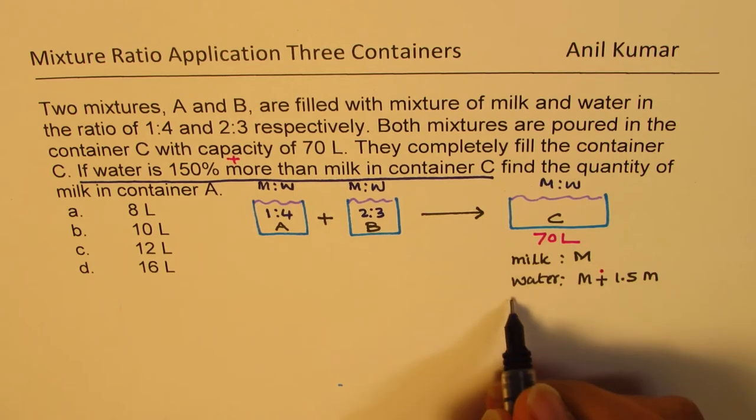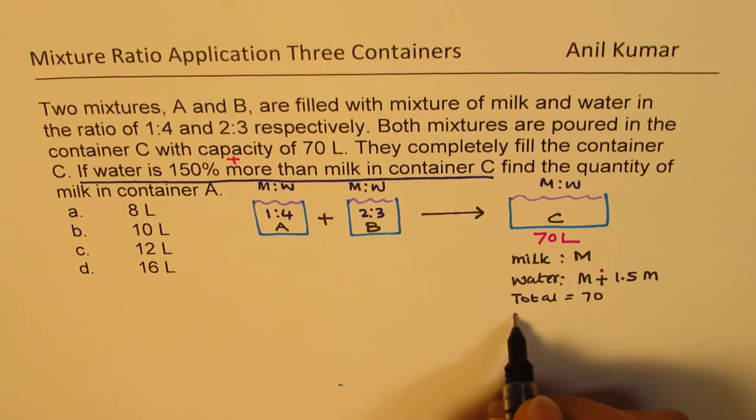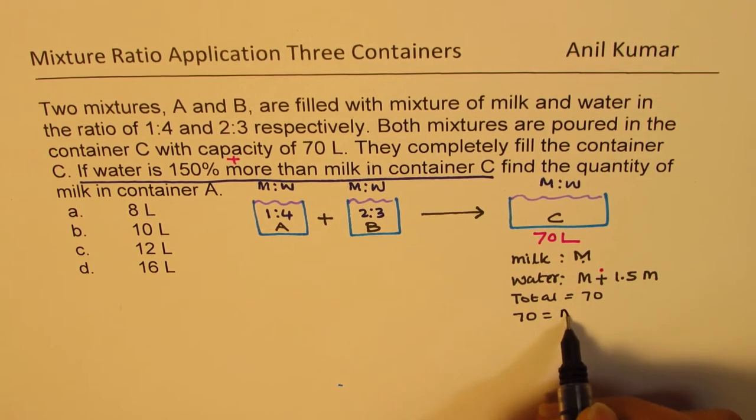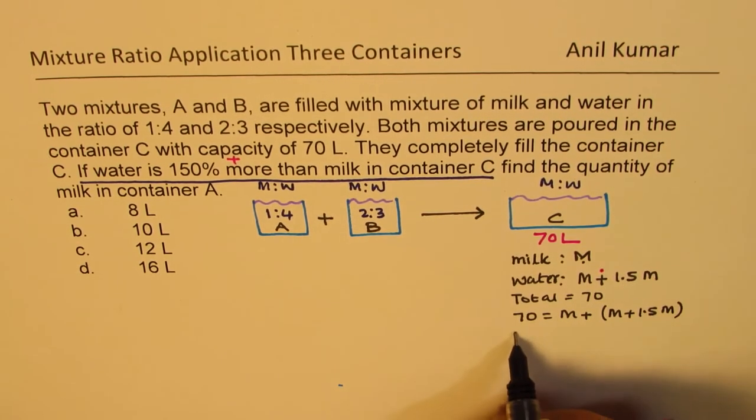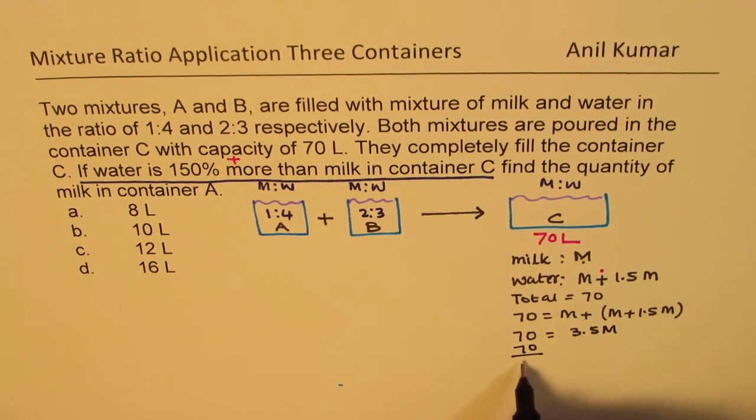Total is 70. That means 70 should be equal to sum of these two: milk plus milk plus 1.5 M. So 70 is equal to 3.5 M. So 70 divided by 3.5 is the milk in this container, which clearly is 20.